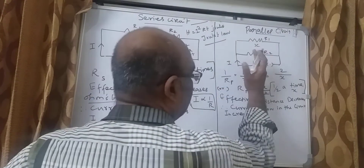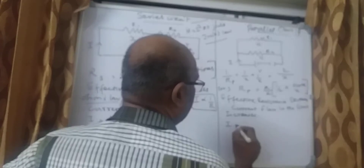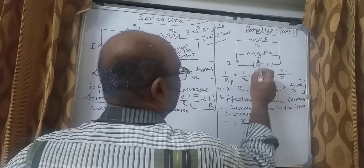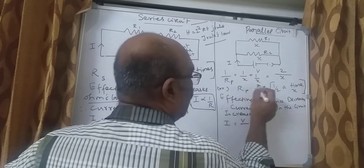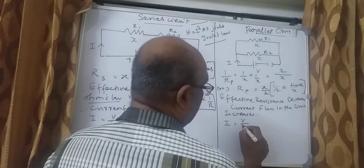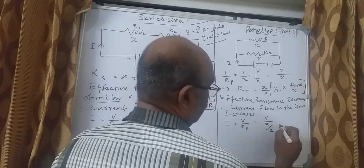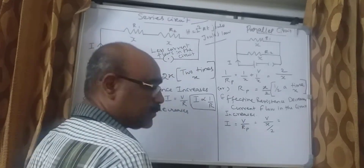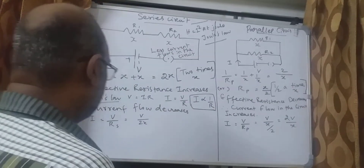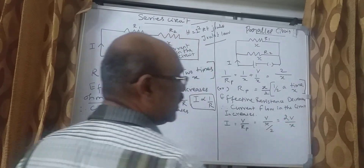Now let us find the current for the parallel circuit. It is given by I = V/Rp, where Rp = X/2, so I = V/(X/2) = 2V/X. So the series circuit current is V/2X and the parallel circuit current is 2V/X.